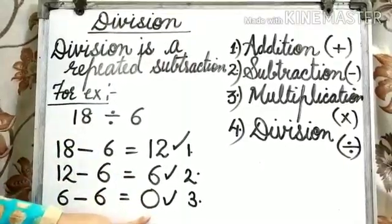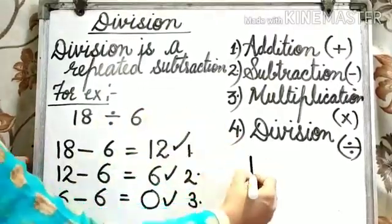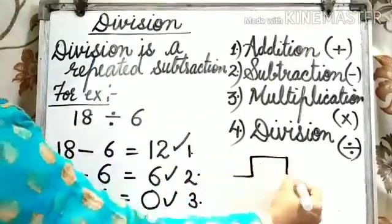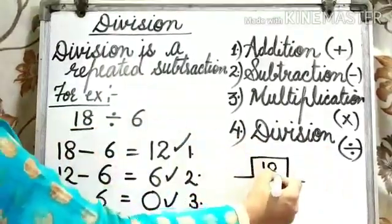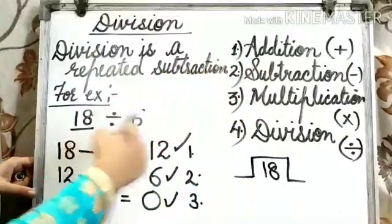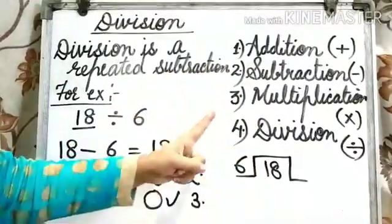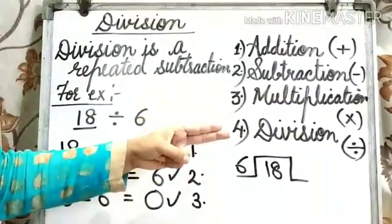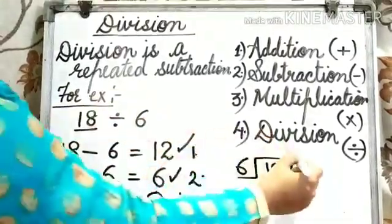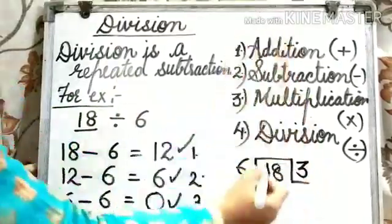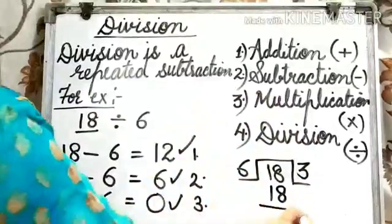Now, it can be found with the help of division. 18 divided by 6. 6 times 1 is 6, 6 times 2 is 12, and 6 times 3 is 18. So, we will write 3 over here and 18 here. Now, we will subtract.